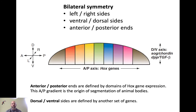How exactly do Hox genes control animal development? It goes back to bilateral symmetry. Bilateral symmetry means you have a left-right axis, a ventral-dorsal axis, and an anterior-posterior axis. The Hox genes specifically define this anterior-posterior axis: a gradient of Hox gene expression defines different segments along it. This is the origin of segmentation of animal bodies.